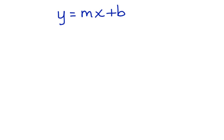And it can also be written in point-slope form: y minus y₁ equals the slope times x minus x₁. This is the point-slope form of a line.